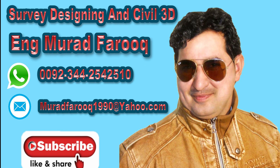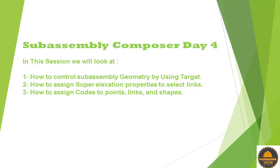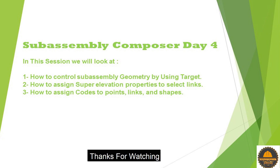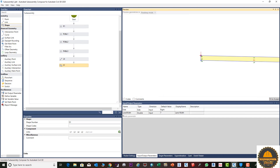Assalamu alaikum dear friends, welcome back to Survey Designing at Civil 3D video series by Murad Farooq. Today is Day 3: Sub Assembly Composer. In this video we will look at how to control sub assembly geometry using targets, how to assign super elevation properties to a selected link, and how to assign codes to points, links, and shapes. In the previous video I already discussed some topics regarding the sub assembly composer — the link is in the description.